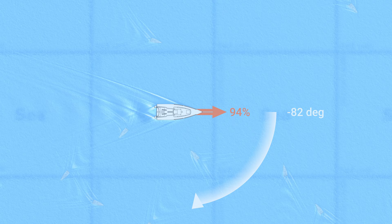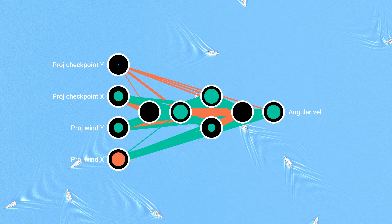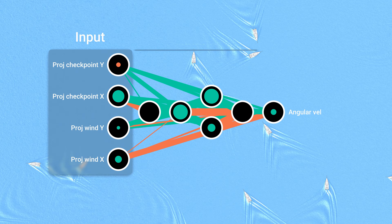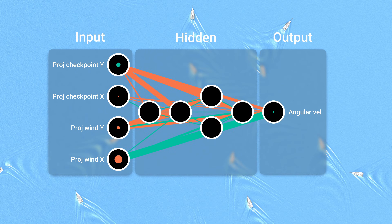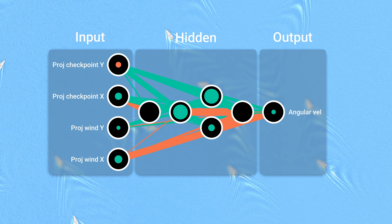The agents will now also have the wind's relative velocity as part of their observations. Just like with the checkpoints, it will be projected into the boat's reference frame.